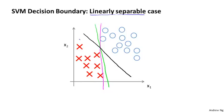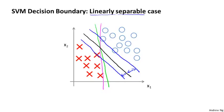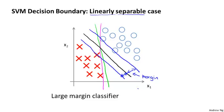The support vector machine will instead choose this decision boundary, drawn in black. That seems like a much better decision boundary than either of the ones drawn in magenta or green. The black line seems like a more robust separator that does a better job separating positive and negative examples. Mathematically, the black decision boundary has a larger distance — called the margin — from any of the training examples, whereas the magenta and green lines come very close to the training examples. This distance is called the margin of the support vector machine.